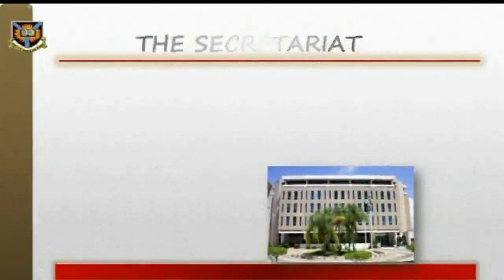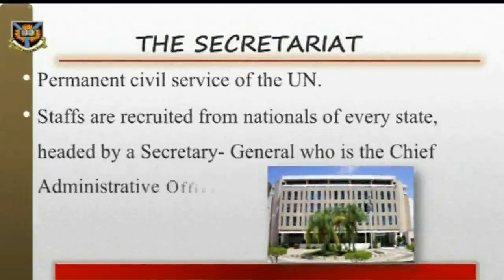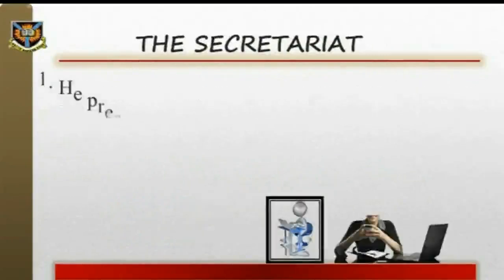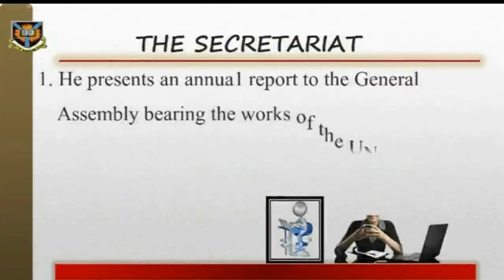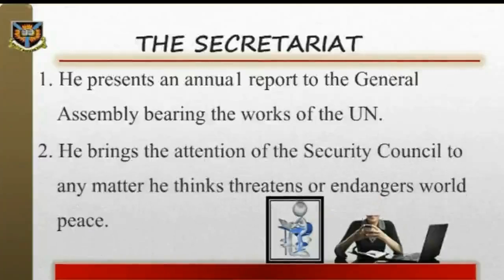The Secretariat. This is the permanent civil service of the United Nations. Its staffs are recruited from nationals of every state. It is headed by a Secretary General who is the Chief Administrative Officer. The Secretary General performs these functions: 1. He presents an annual report to the General Assembly on the work of the United Nations. 2. He brings to the attention of the Security Council any matter he thinks threatens the United Nations or endangers world peace. Apart from the above organs, there are Specialized Agencies or Bodies which, together with the United Nations, constitute the United Nations system.